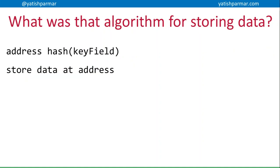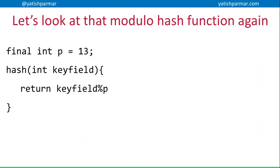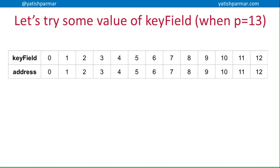Now if we look at a basic algorithm for storing data, basically the address was returned from the hash function and then we're going to store the data at the address. This was the modulo function that we were using to generate a hash of the key field.